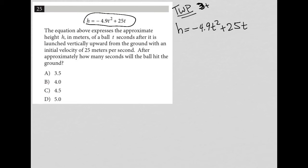So this question starts out by saying the equation above expresses the approximate height H in meters of a ball T seconds after it is launched vertically upward from the ground. So I know that T is time. So I have two T's with an initial velocity of 25 meters per second. So I'm not sure if that's useful, but I'm going to write V equals 25 meters per second.